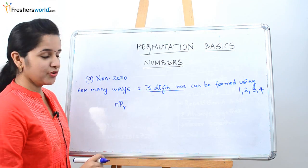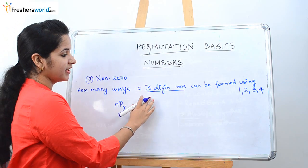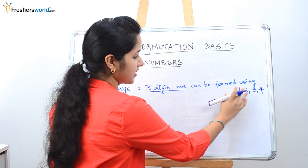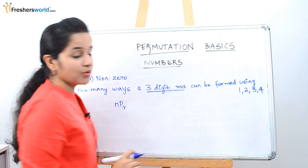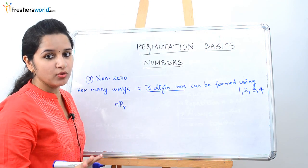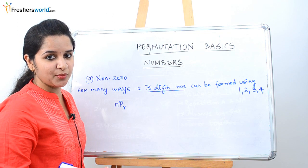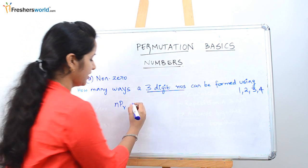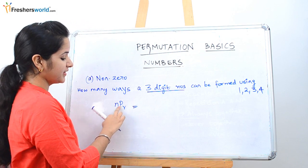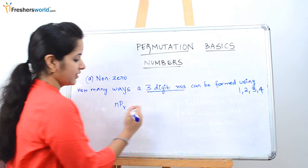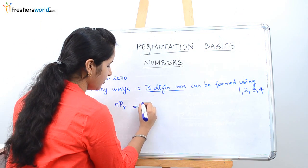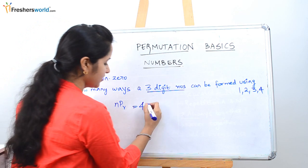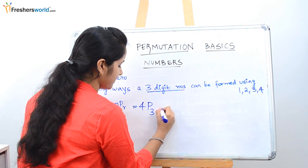The question we are going to deal with is: how many ways can a three-digit number be formed using 1, 2, 3, 4? They have given four numbers and are asking us to form a three-digit number. We know the formula is NPR. Four digits are given and we need to form a three-digit number, so it is 4P3.